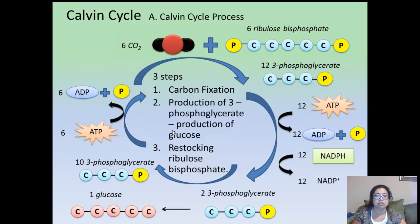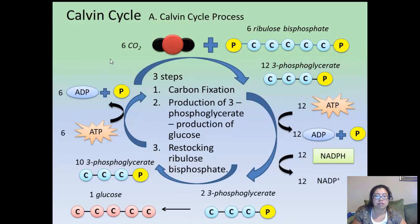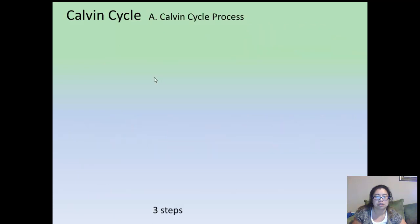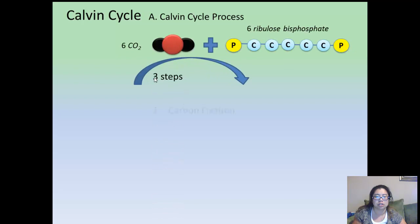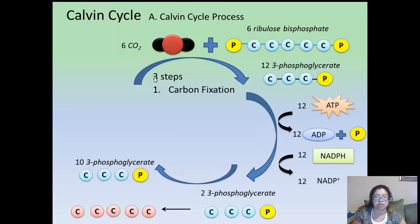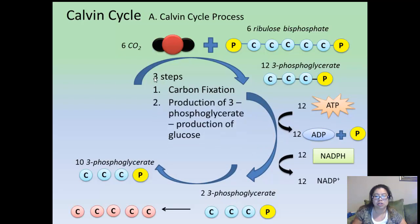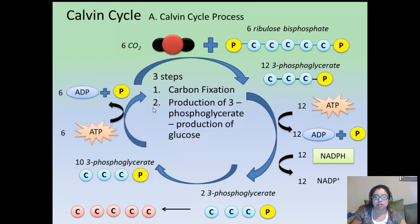The general overview of the Calvin Cycle is shown here. There are three steps. The first step is called carbon fixation. The second step has two parts: the production of 3-phosphoglycerate and the production of glucose. The last step is restocking the ribulose-biphosphate.